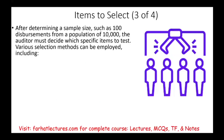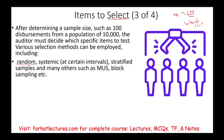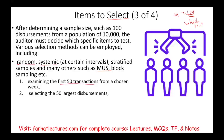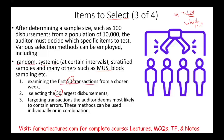The third decision is which specific items to select. We've determined n equals 100 — now, which 100? We can select randomly, systematically at a certain interval, or stratify the population by separating it into large, medium, and small accounts based on dollar value. Other methods include monetary unit sampling, block sampling, and others. For example, we could examine the first 50 transactions from a chosen week, or select the 50 largest, or target transactions most likely to contain errors.